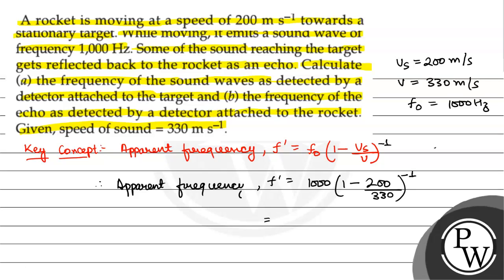That will be equal to 1000 multiplied by 330 by 130 to the power minus 1. That is 1000 multiplied by 330 by 130.